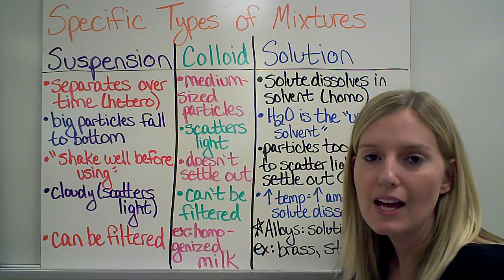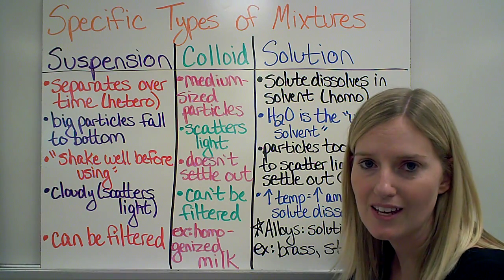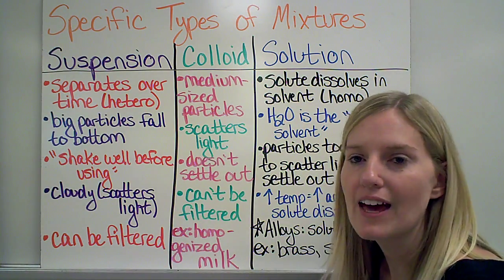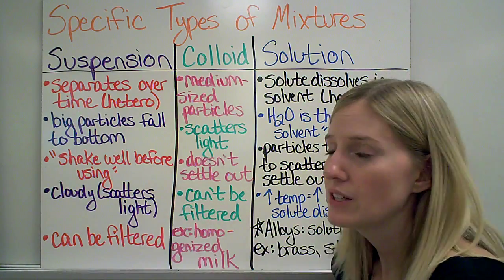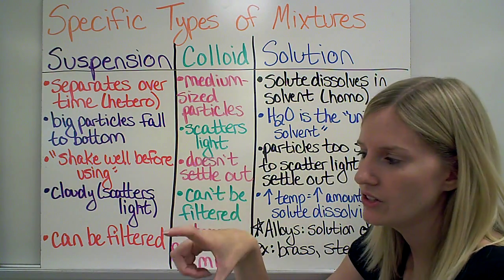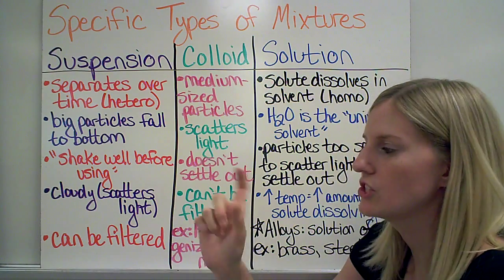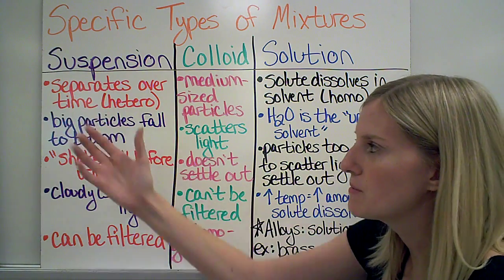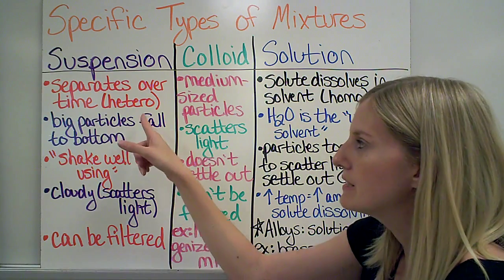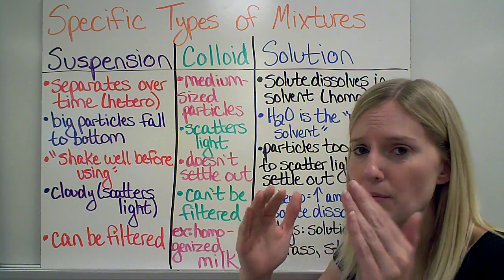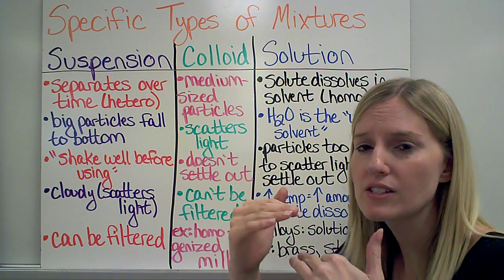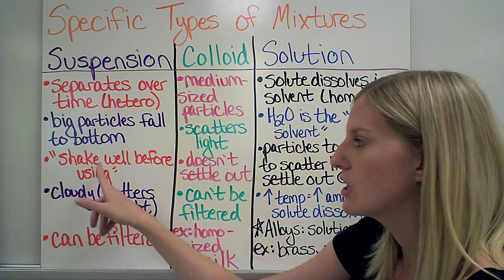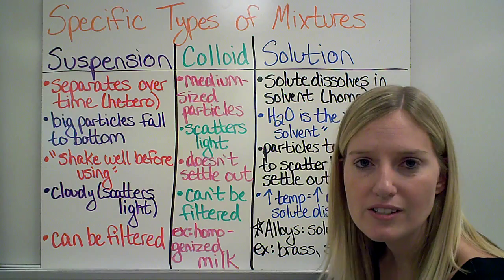There are different types of mixtures within homogeneous and heterogeneous mixtures. So a suspension is a mixture that is going to end up separating over time. So that means that I can shake it up and at first it looks cloudy. So think about like mud in water. So I shake it up and it looks cloudy and over time that mud is going to fall to the bottom. So that means that, that's what we mean by separates over time. That means that this is definitely a heterogeneous mixture. If things are separating, that means I can see the different parts. That's what makes it heterogeneous. So the big particles fall to the bottom.